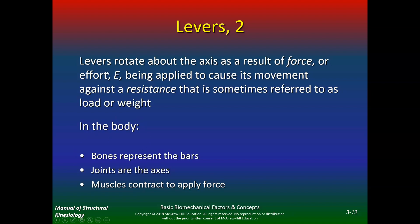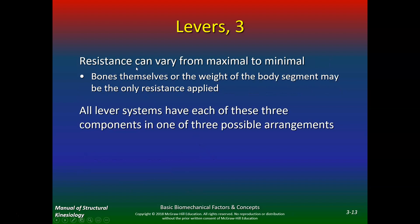That's how levers work in the body — bones represent the bars, joints are the axes, and muscles contract to apply the force. Resistance can vary from max to min; the bones themselves, or the weight of the body segment, may be the only resistance applied. All lever systems have each of three components in one of three possible arrangements: first class, second class, or third class lever.